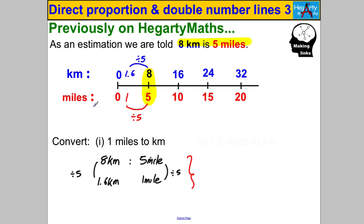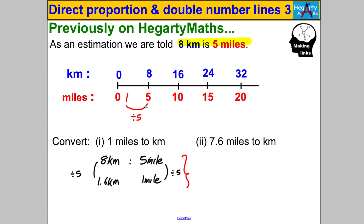What if I asked you to convert 7.6 miles to kilometres? Before showing the ratio method, I want to highlight something. Go back to the double number line — in the first step we worked out that one mile equals 1.6 kilometres. This is a unit rate — it tells us what one mile is worth.